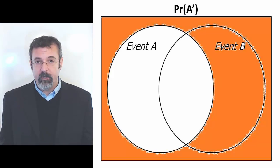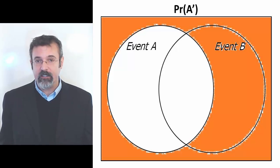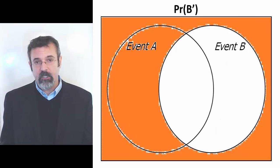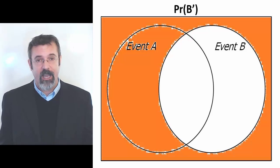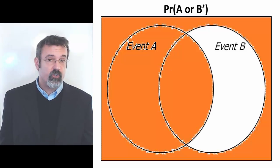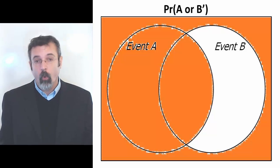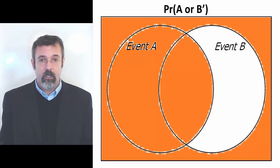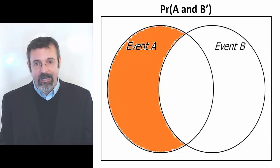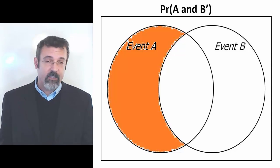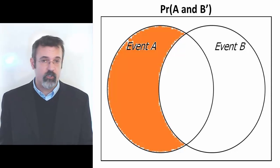Like the probability of Event A not occurring, which is everything outside the Event A circle. The probability of Event B not occurring, which is everything outside the B circle. The disjoint probability of Event A occurring or Event B not occurring. The joint probability of Event A occurring and Event B not occurring. And any other combination of marginal, joint, and disjoint probabilities.